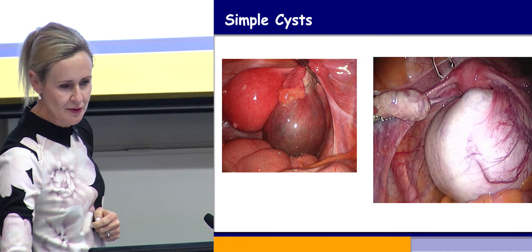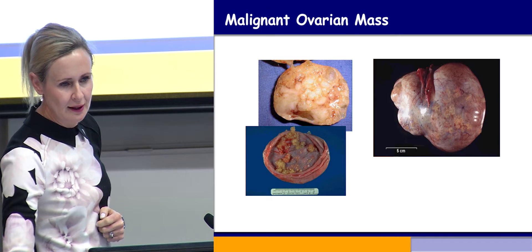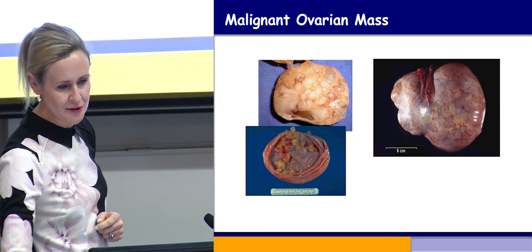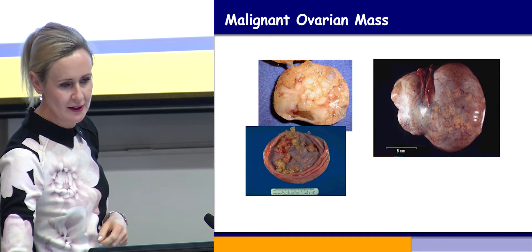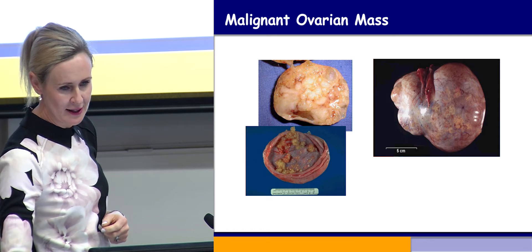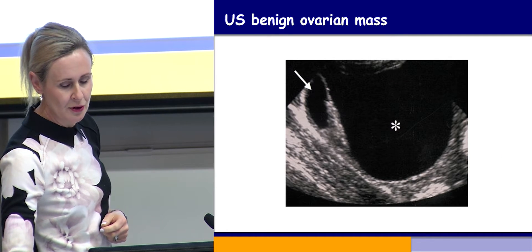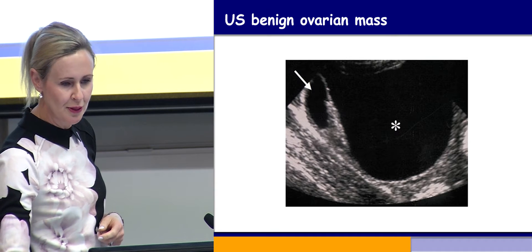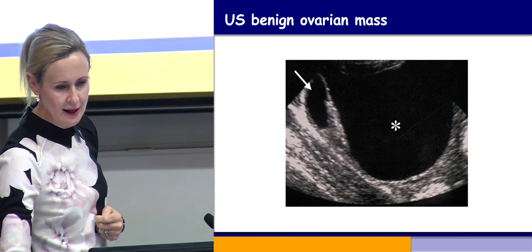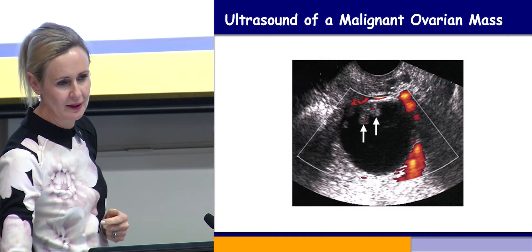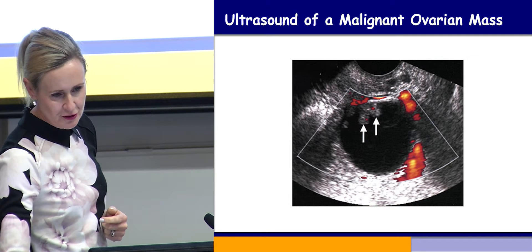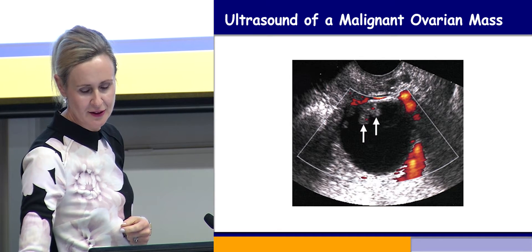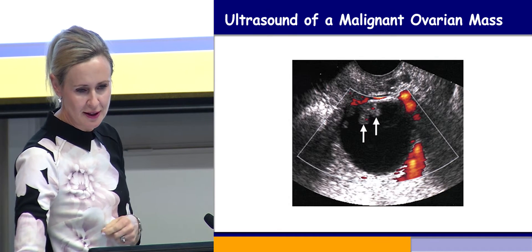Here are some pictures of simple cysts at laparoscopy. And this is a picture of a malignant cyst — you can see the classic appearance internally of lots of little nodules, irregular and hard. This is a classic benign ovarian mass on scan: a large fluid-filled sac with not much irregularity, no nodules, just looks like a big empty bag. By contrast, an ultrasound of a malignant cyst shows lots of little nodules with blood flow going to the nodular area.